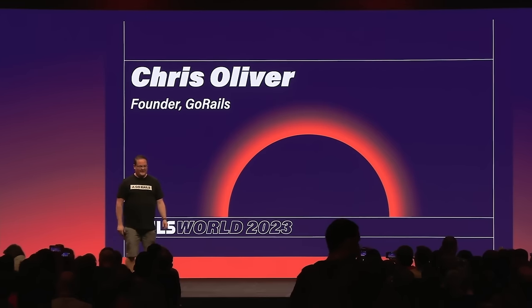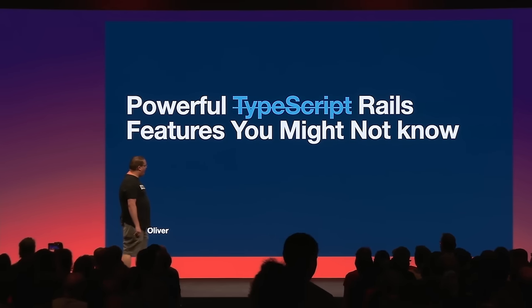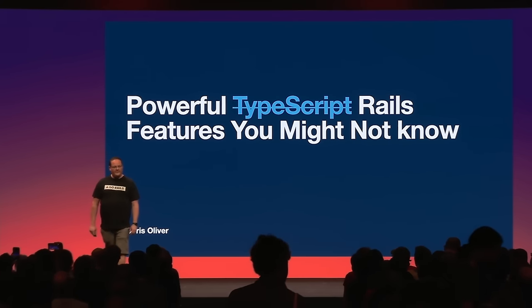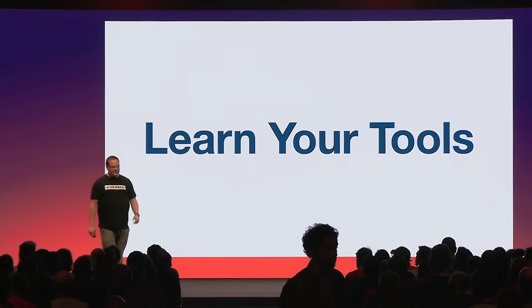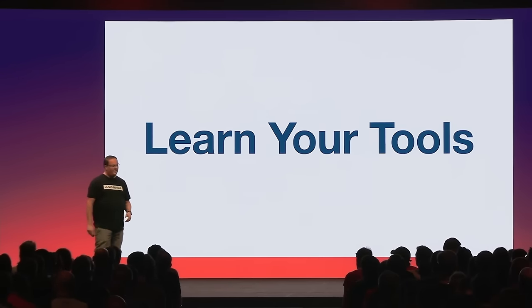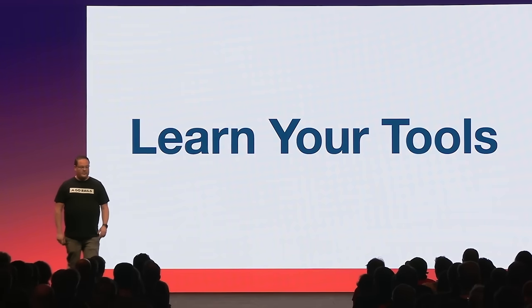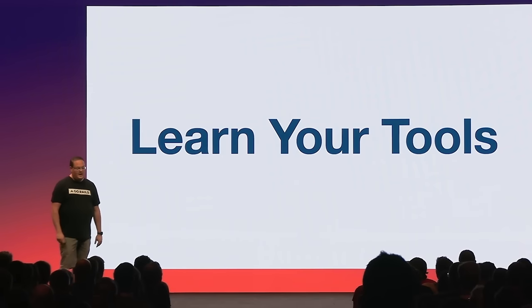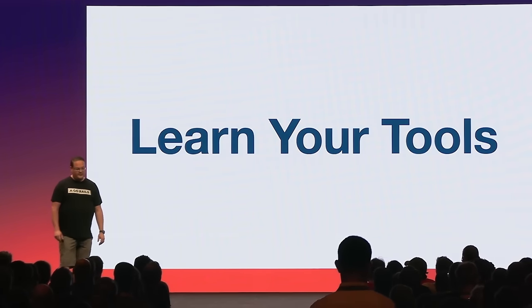Hello everybody, how are you doing? We are going to talk about a whole bunch of stuff in the next 35 minutes — not TypeScript this time. The goal of this talk is to remind you to pay attention to everything that's available to you. When all you have is a hammer, everything looks like a nail, and it's easy to solve problems the same way you've always done it. There's a lot of new stuff always coming out in Rails, so we'll touch on features — some you'll know, some you might not — including new stuff in Rails 7.